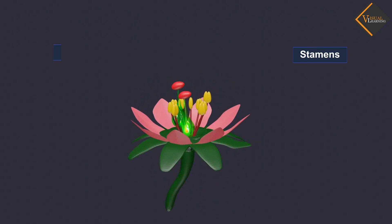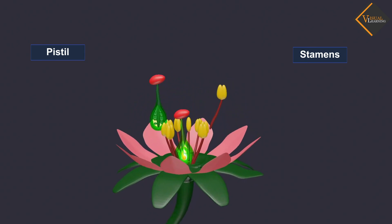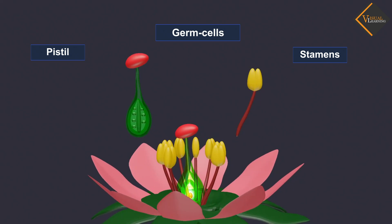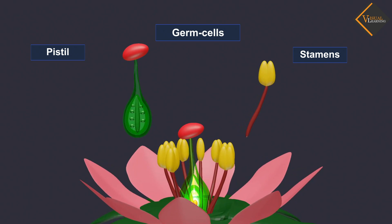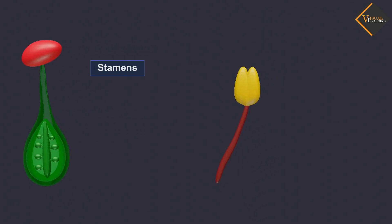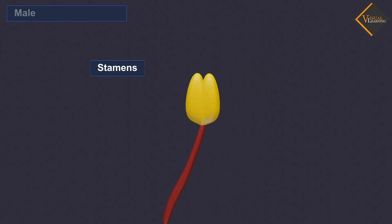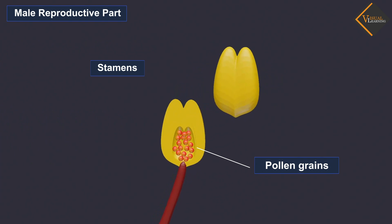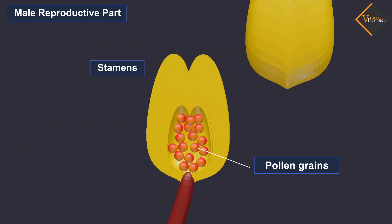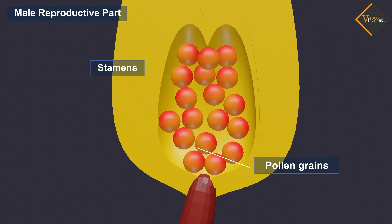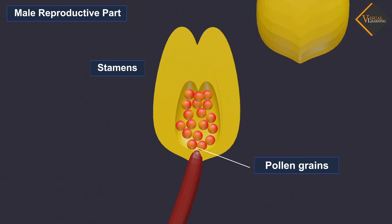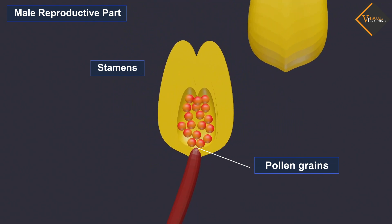Stamens and pistil are the reproductive parts of a flower which contain the germ cells. Stamen is the male reproductive part and it produces pollen grains that are yellowish in color. You must have seen this yellowish powder that often sticks to our hands if we touch the stamen of a flower.